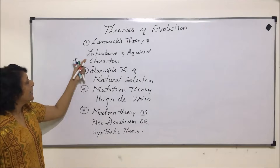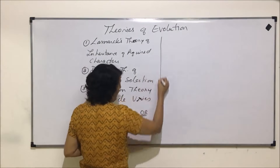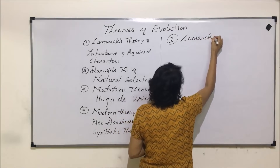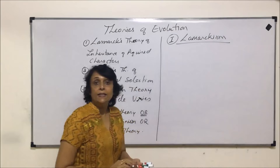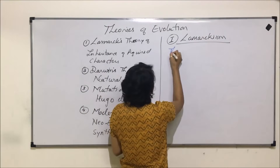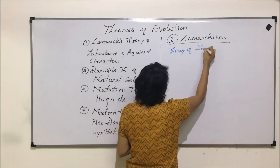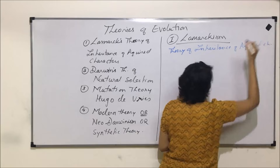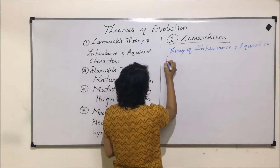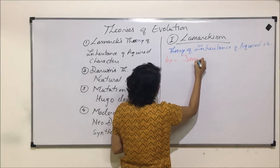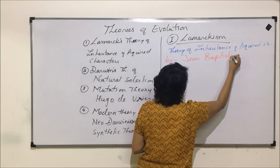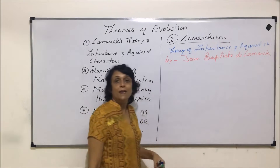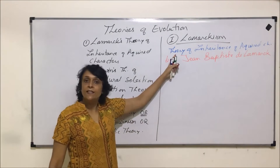We will start with Lamarck's theory of inheritance of acquired characters. This theory was proposed by Jean Baptist de Lamarck, and so it is also known as Lamarckism. As the name says — inheritance of acquired characters — let us first talk about the postulates of this theory. Postulates means the important points on which this theory is based.